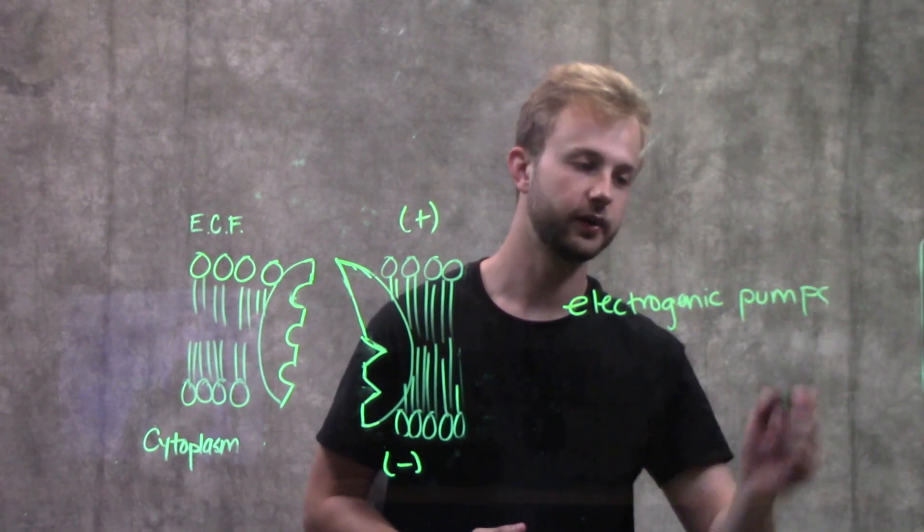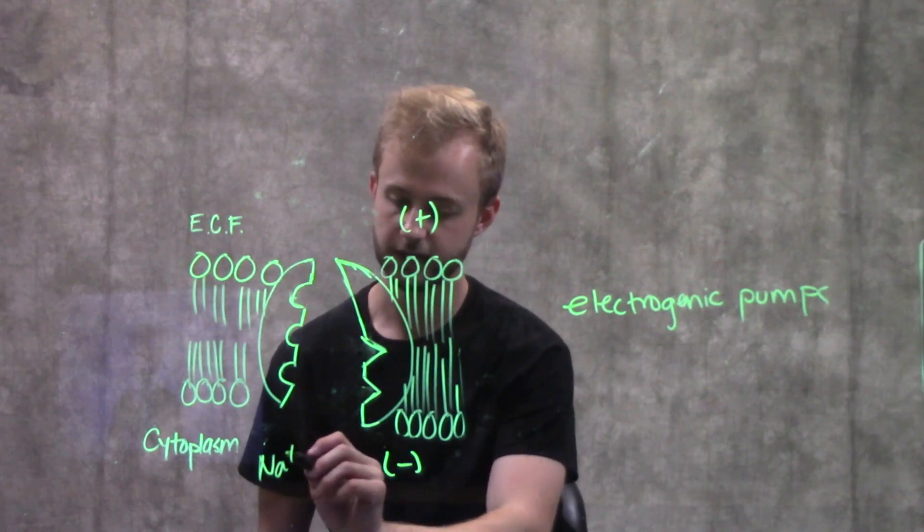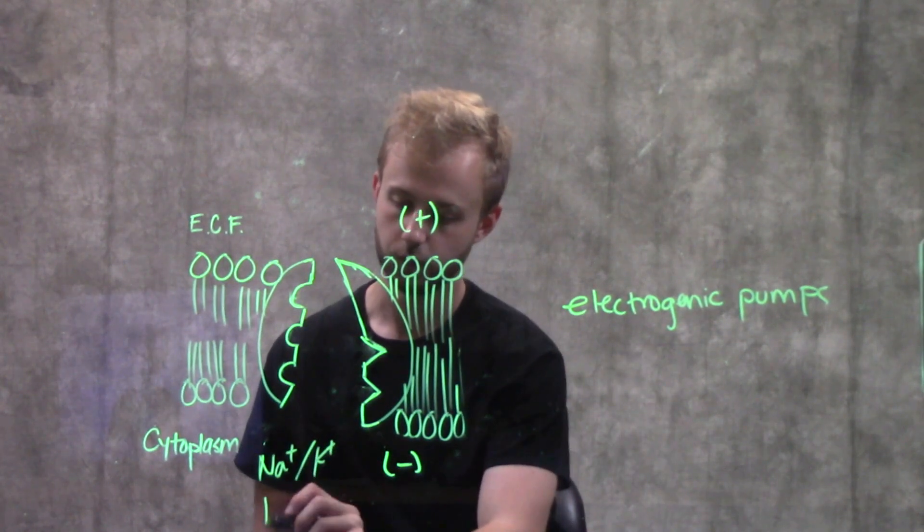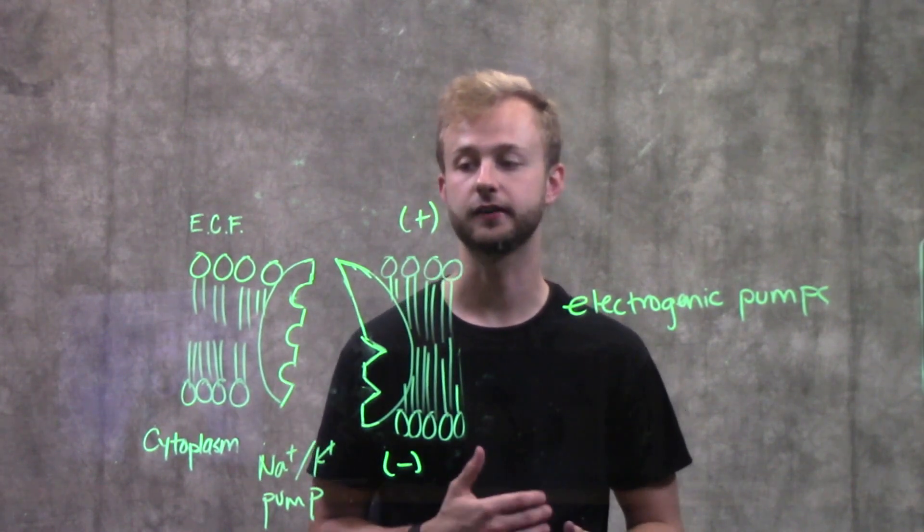So the most important electrogenic pump in animals is going to be the sodium potassium pump, which we already know how this pump works from the video on active transport.